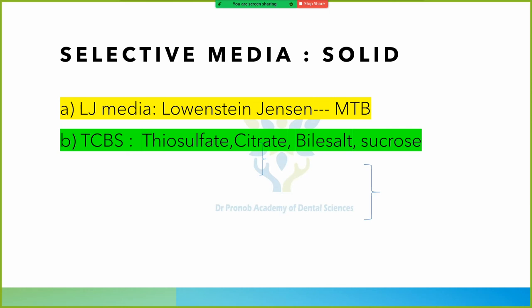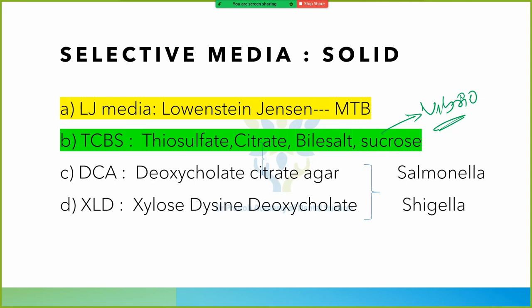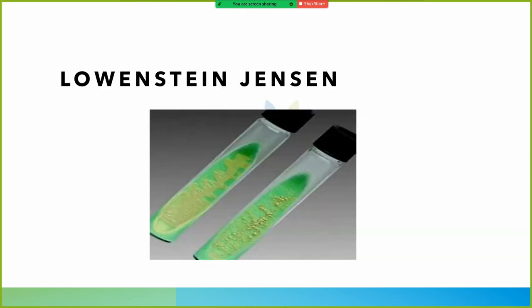Selective media performs the same function as enrichment broth but is solid. Selective media examples: Lowenstein-Jensen media for Mycobacterium tuberculosis; TCBS (Thiosulphate Citrate Bile Salt Sucrose) for isolation of Vibrio cholerae; deoxycholate citrate agar; potassium tellurite agar for Corynebacterium diphtheriae.